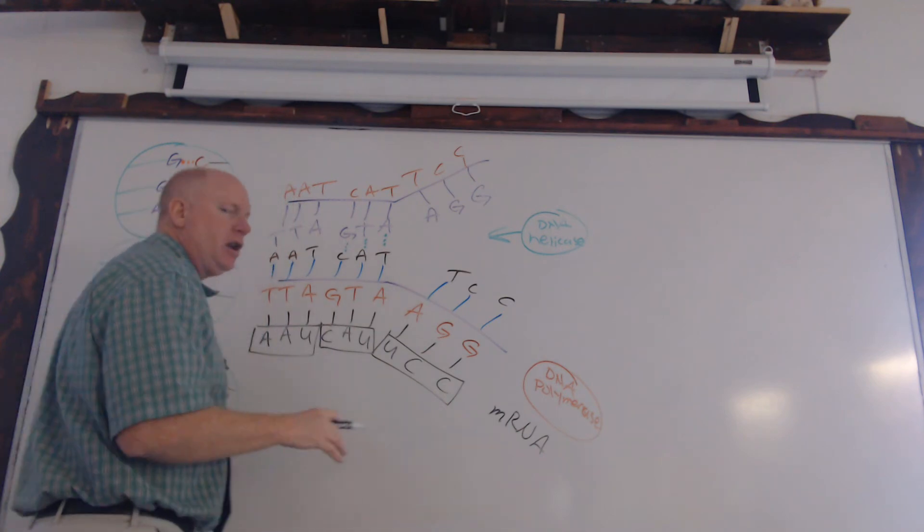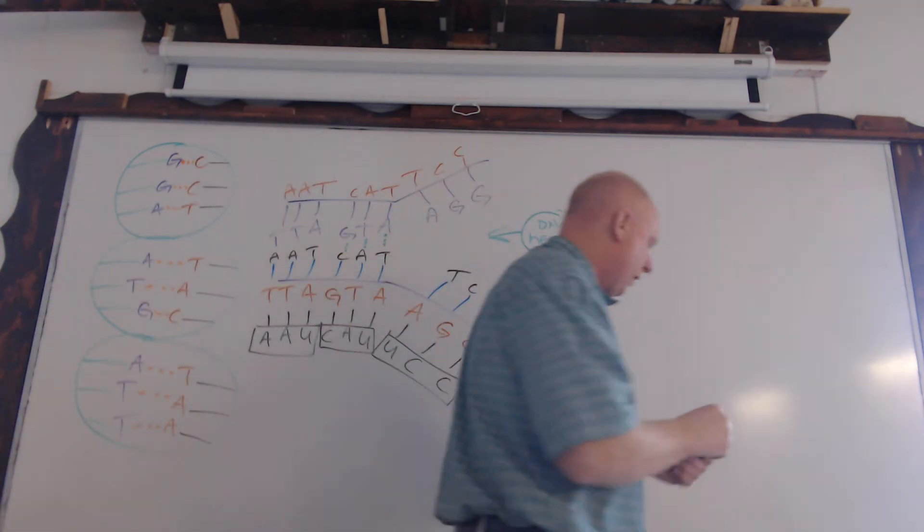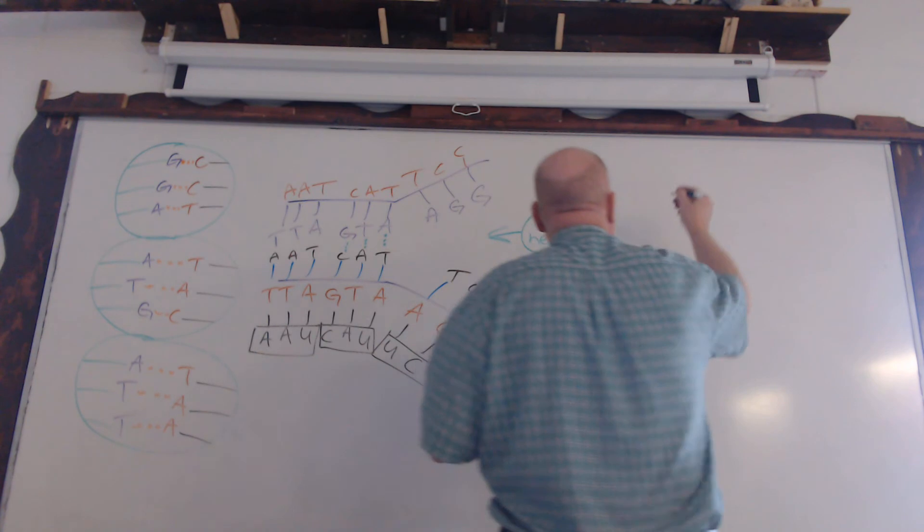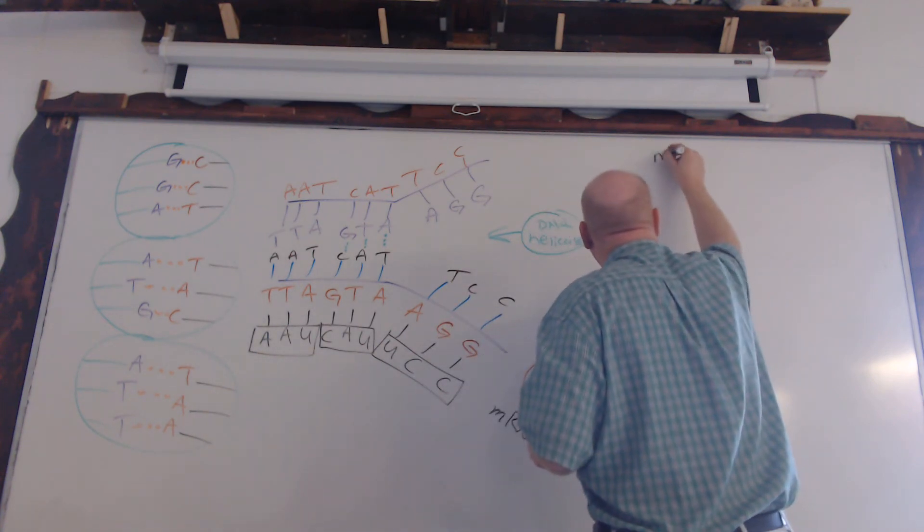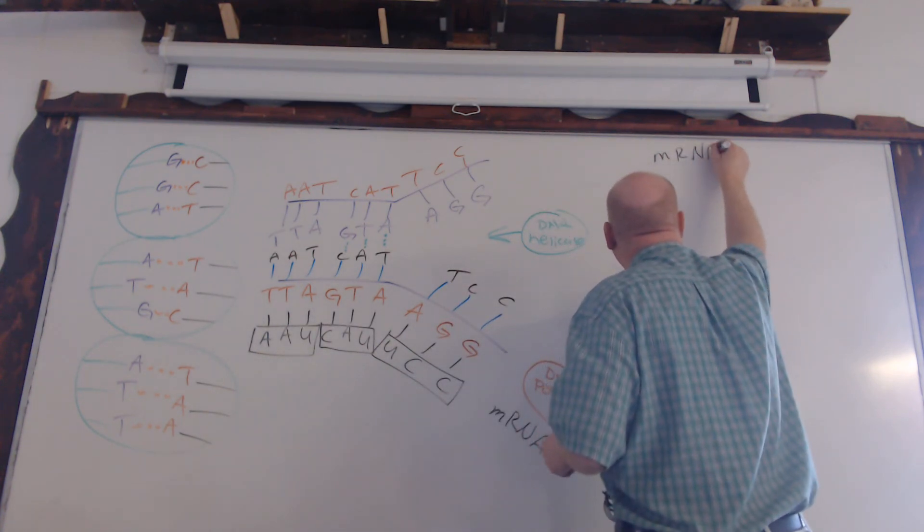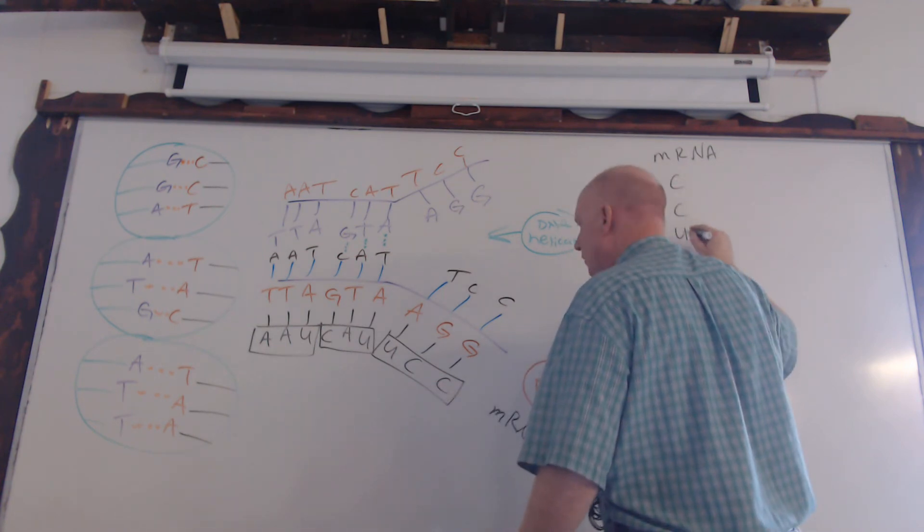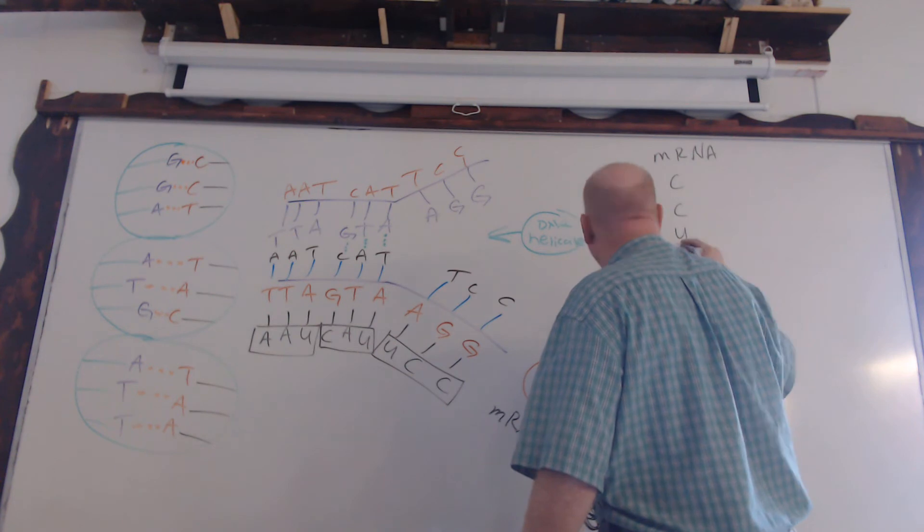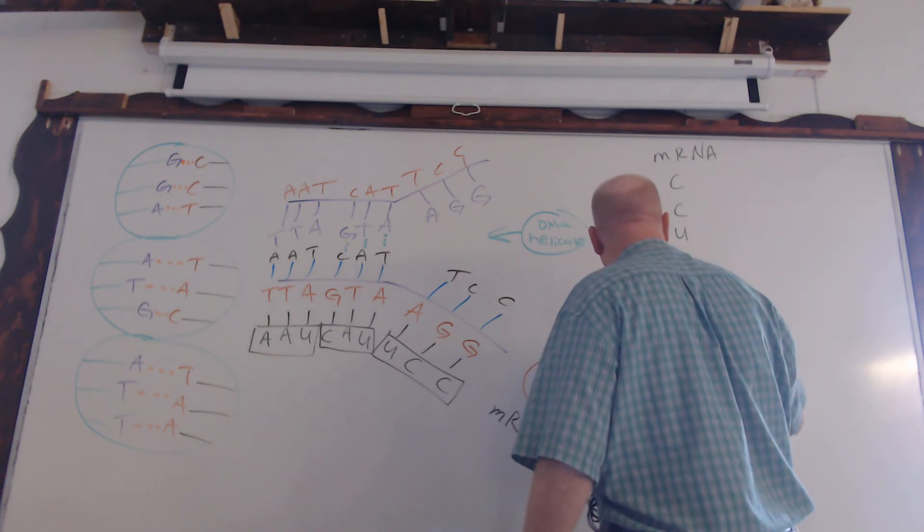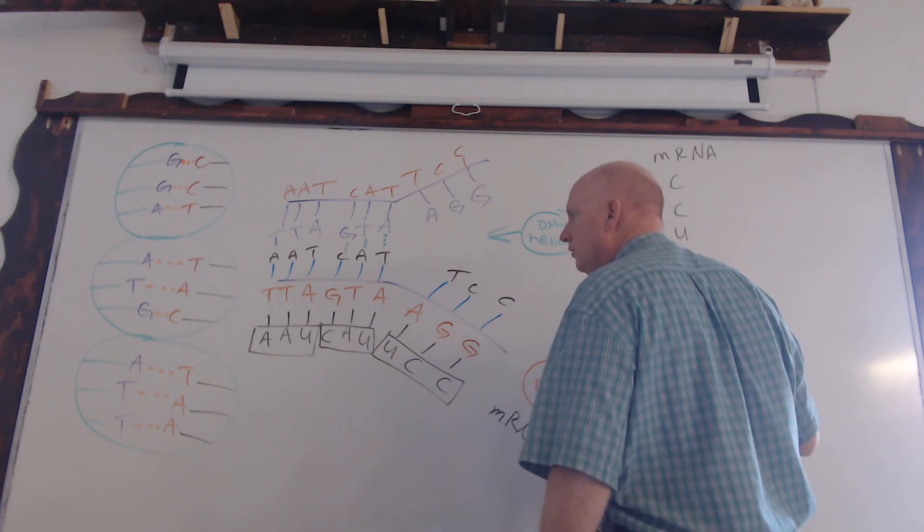So this code then will leave the nucleus and then it's going to head to the ribosome where what happens is this messenger RNA. We've got CCU, UAC, and then UAA.